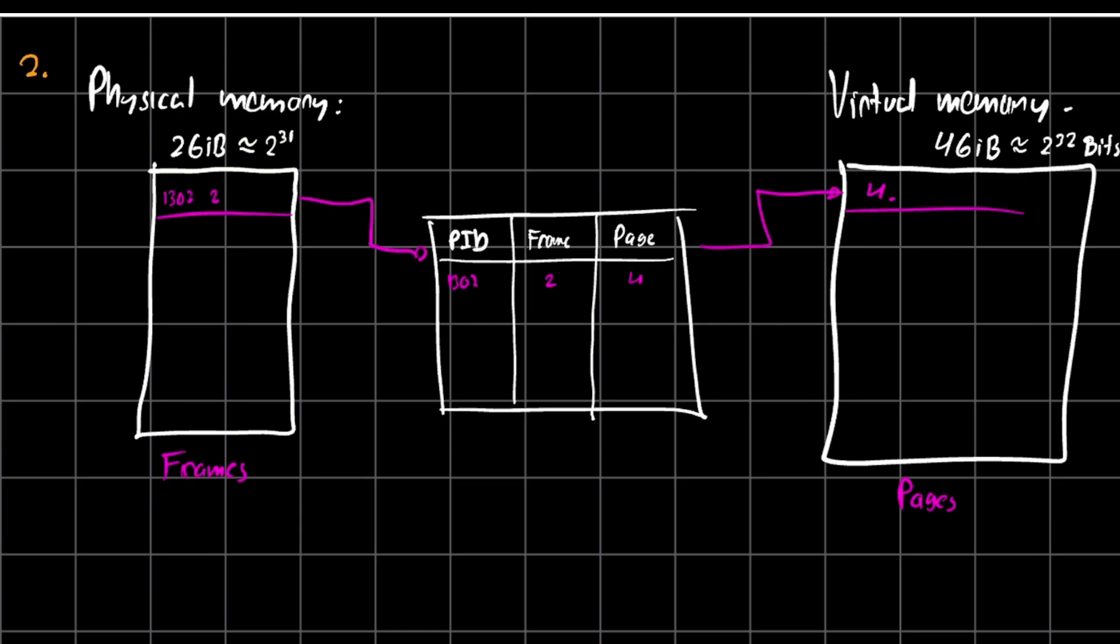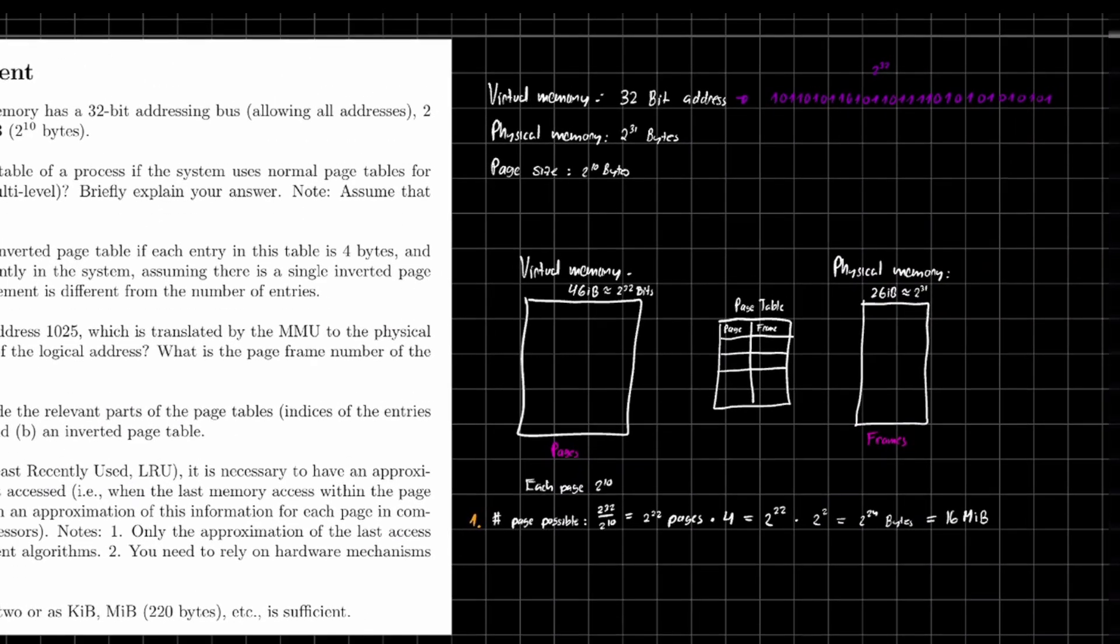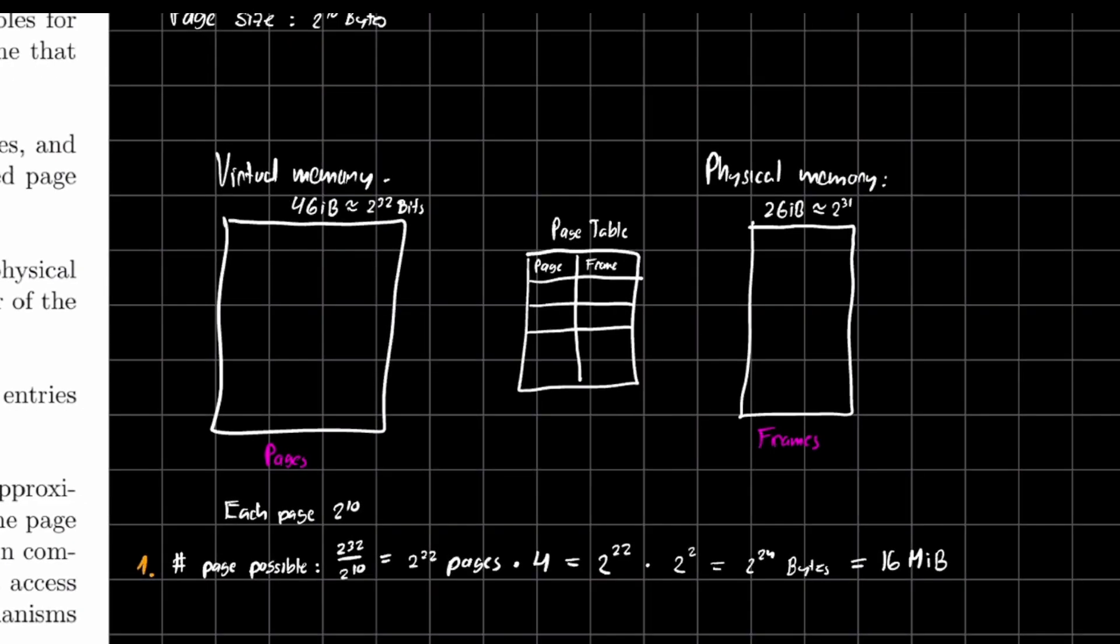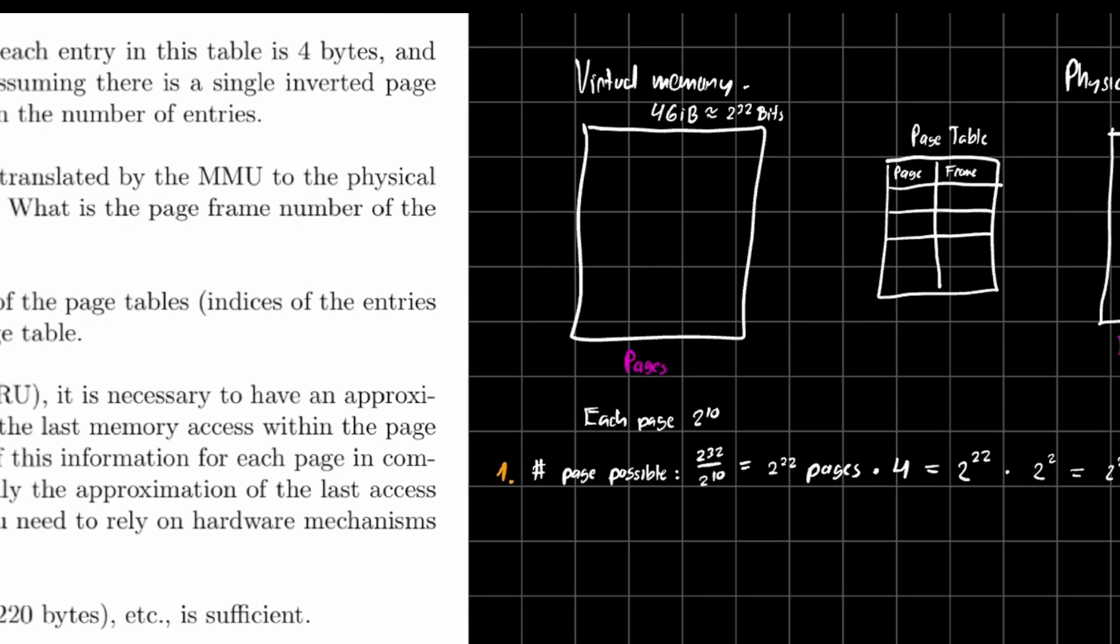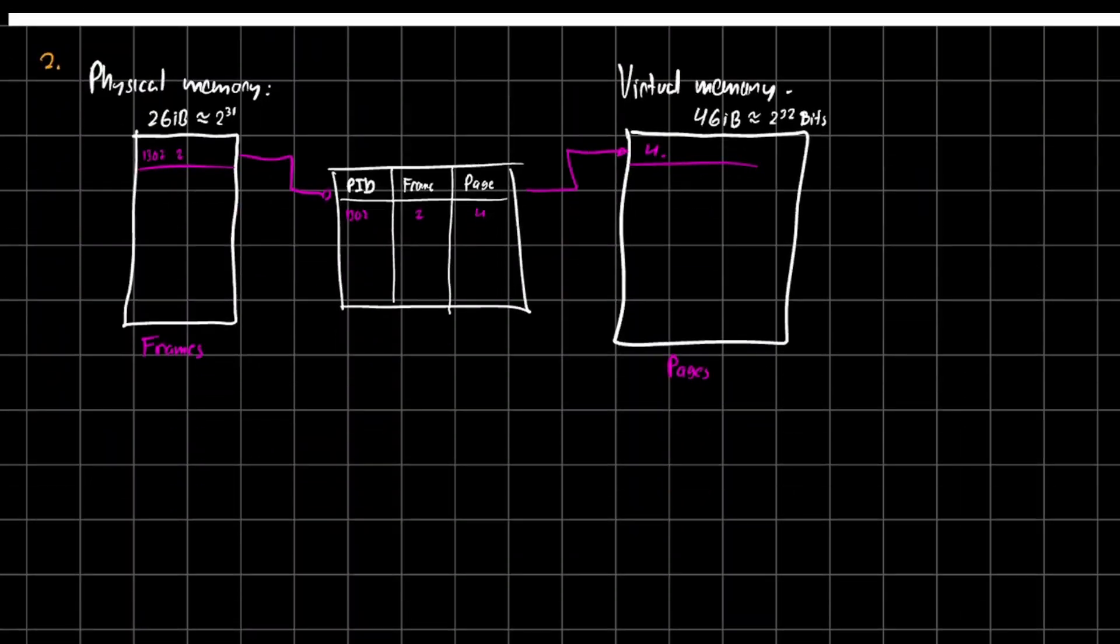So in a sense, we're doing the opposite, the inverted, the inversion of this operation. Rather than defining which page is assigned to which frame, we're doing the same thing rather than finding which frame is assigned to which page. And it's important to notice that we have a PID, which is process ID, the frame and the page.